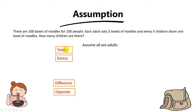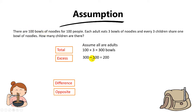To find the total number of bowls of noodles, take 100 times 3, because every adult eats three bowls. So 100 times 3 gives you 300 bowls. To find the excess, since there are only 100 bowls, take 300 minus 100, which gives you 200.